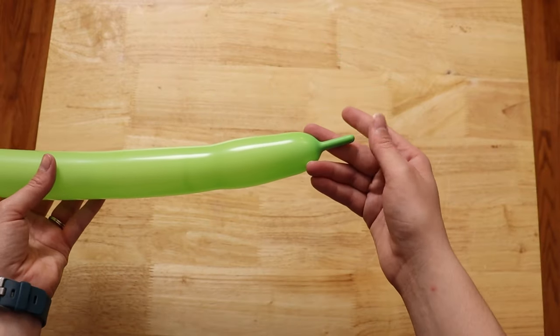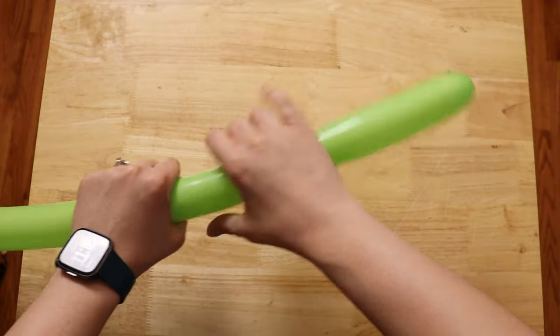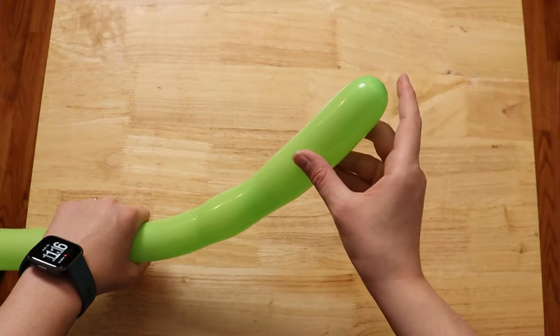Now I have a little bit that's uninflated on the end, and I'm going to just squeeze along the length of that stem to push the remainder of the air to the tip of the balloon so it's nice and rounded.